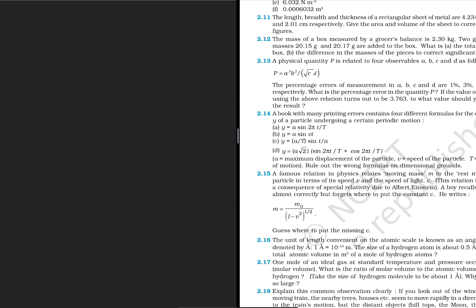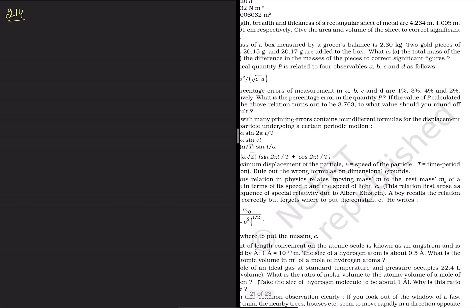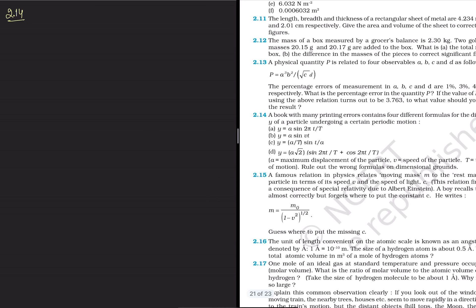Now we shift to the next problem, question 2.14. Here a book with many printing errors gives 4 different formulas for displacement of a particle undergoing periodic motion.